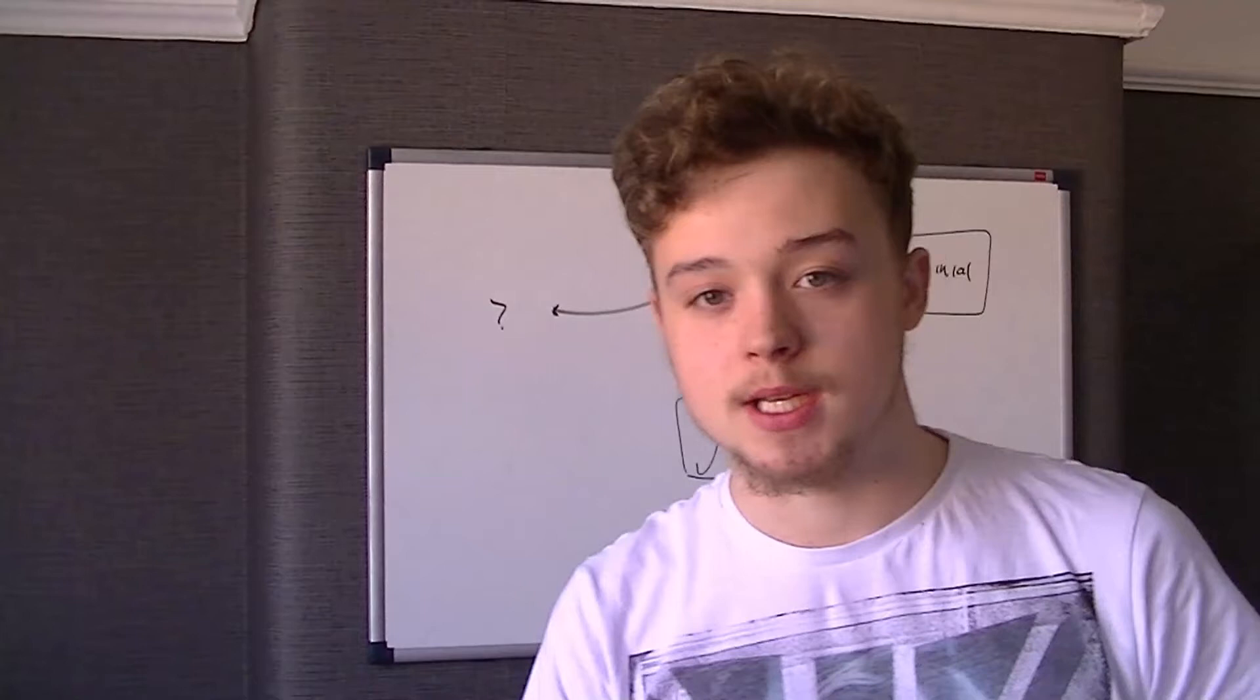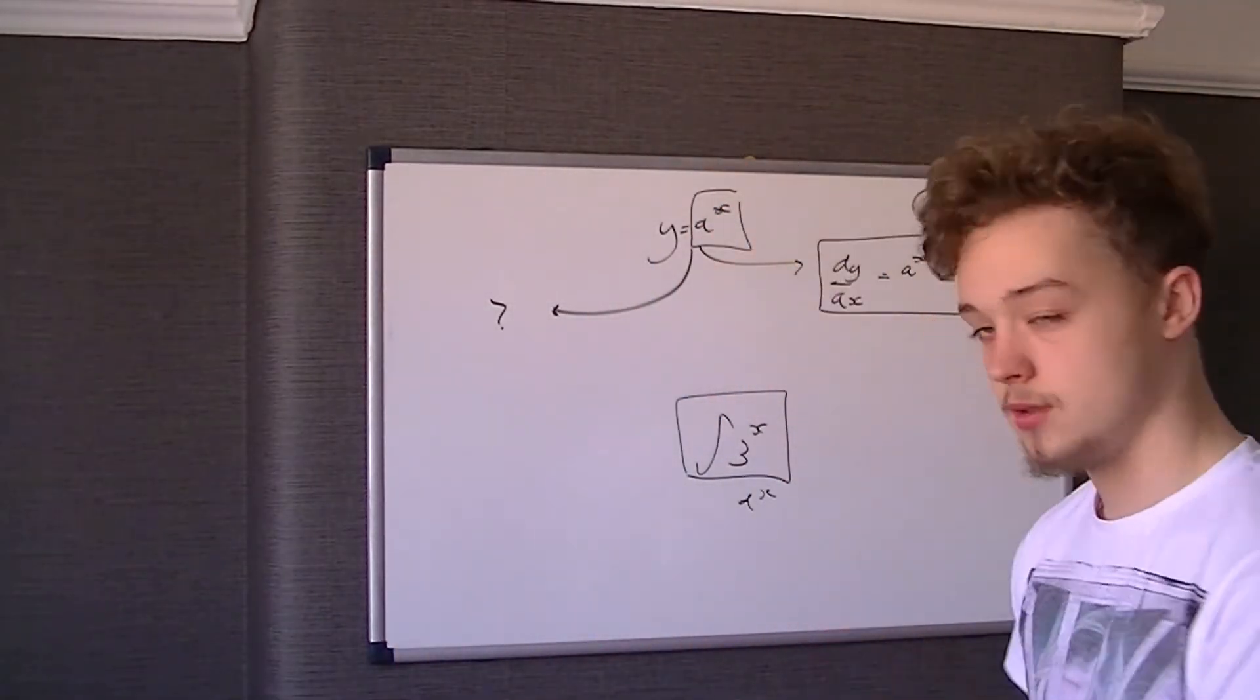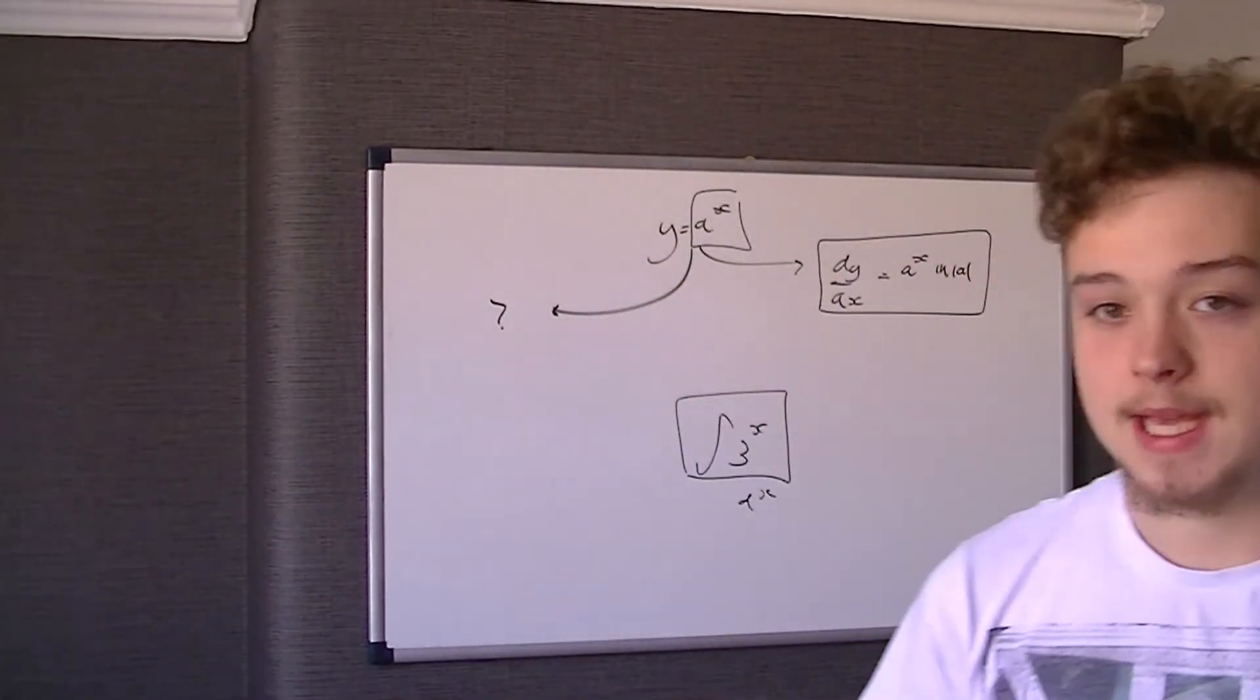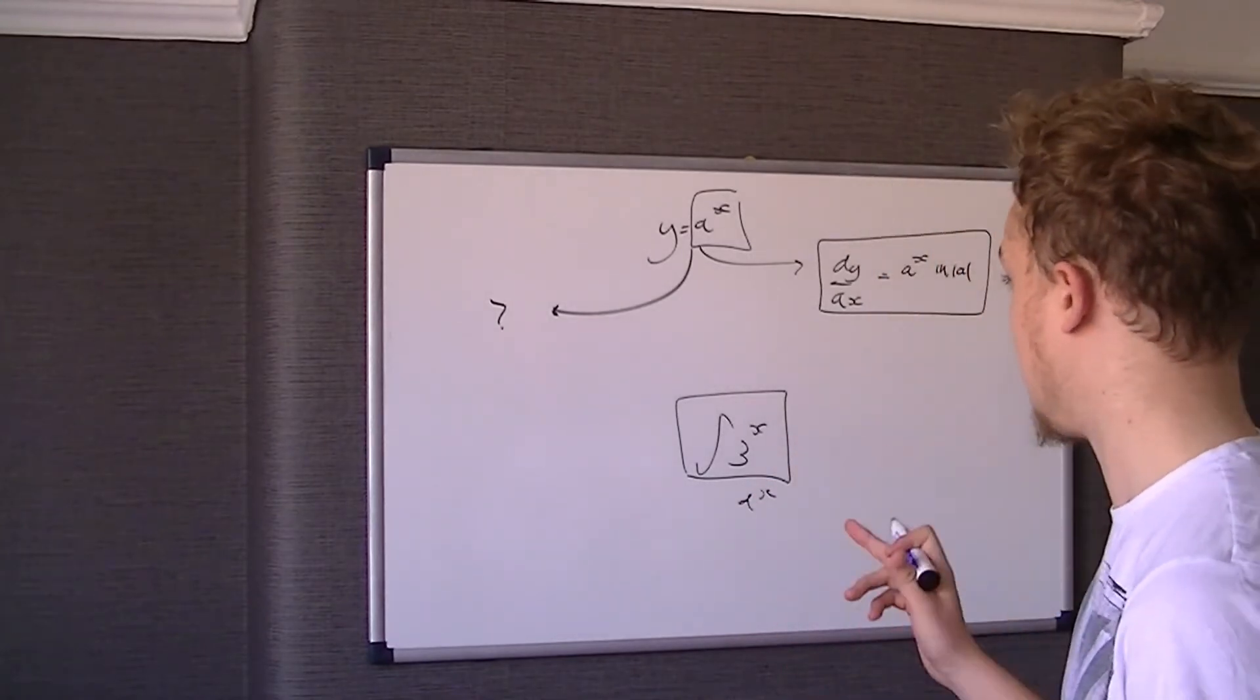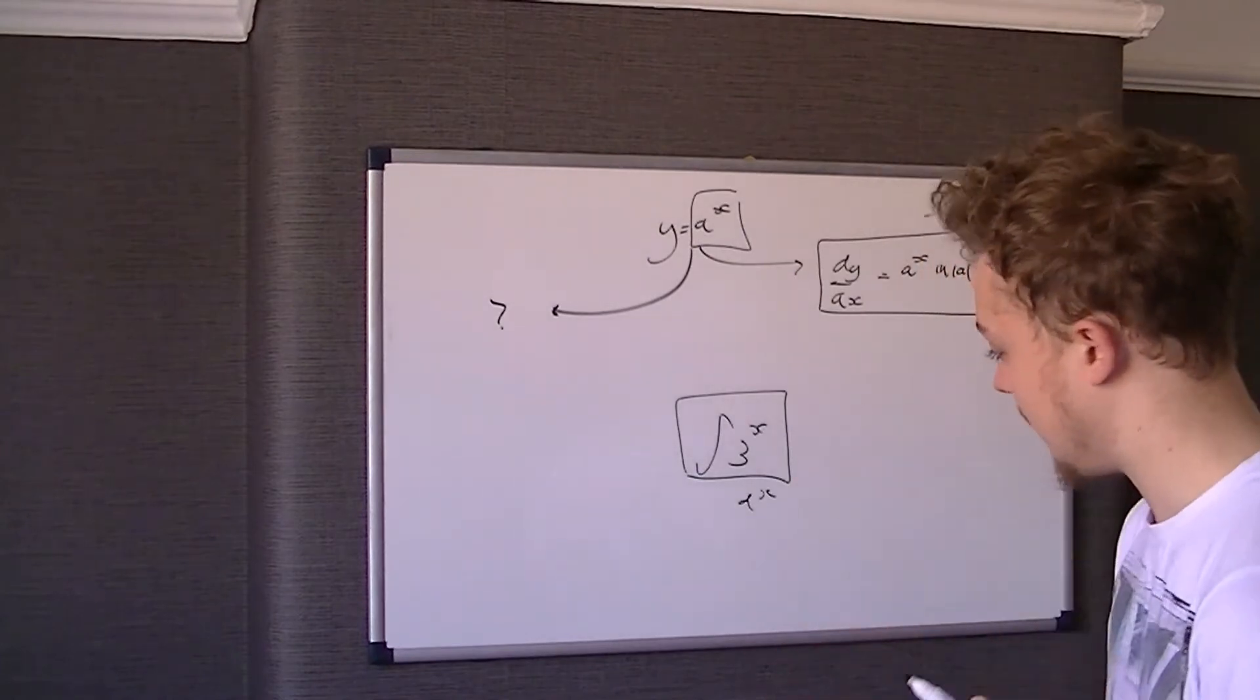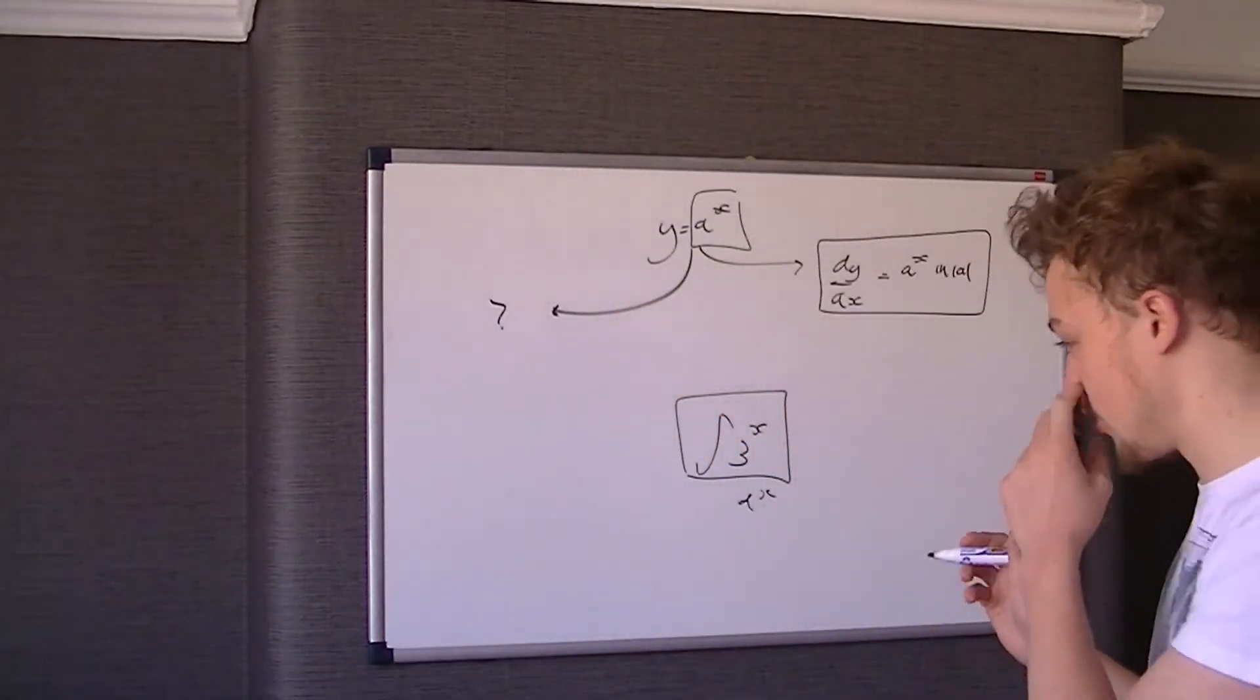We differentiated a to the x or something like that, and we've got this a to the x. But we know when we differentiate a to the x, we get a to the x ln a. But there's no ln a, in other words there's no ln 3 in this question. So it must have cancelled out with the other thing.